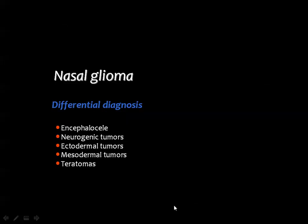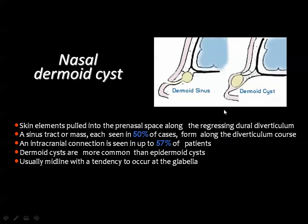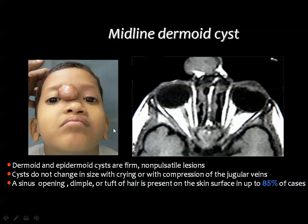Nasal glioma is frequently mistaken for dermoid cysts in the differential diagnosis. Dermoid cysts or dermoid sinus result from incomplete involution of the neural diverticulum, creating communication between the exterior and the tract itself. By MRI, you can assess the lesion contents, and by CT and MRI you can exclude encephalocele by demonstrating the absence of intracranial connection.